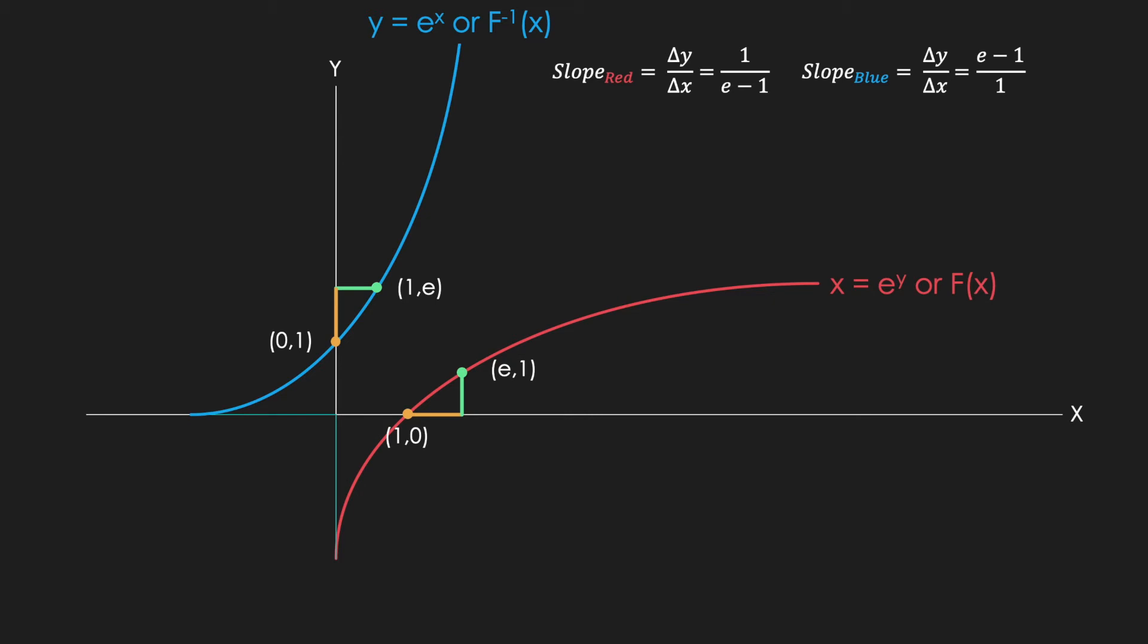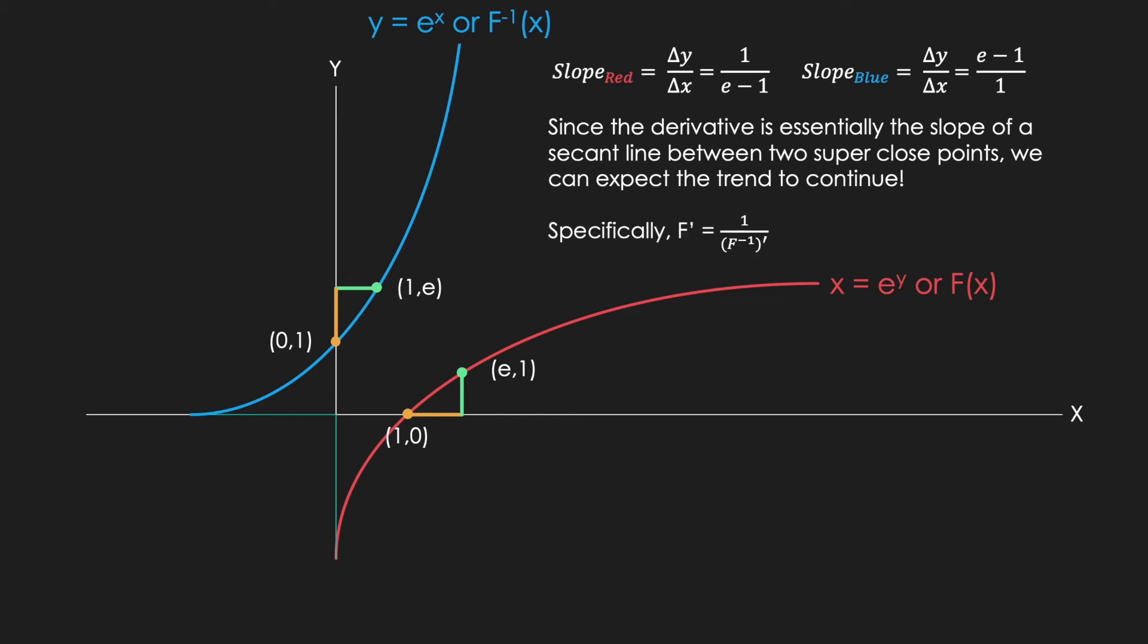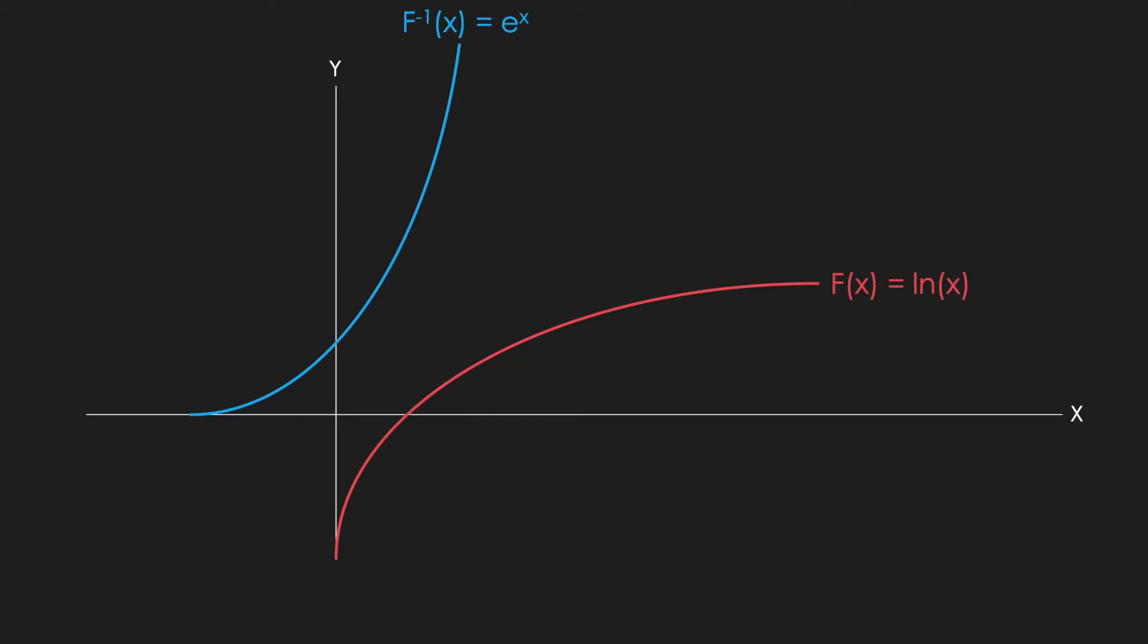Since the derivative is fundamentally a secant line between two super close points, we can expect this trend to continue here as well. More specifically, we can say that the derivative of our original function, the natural log, is one over the derivative of the inverse function, given that the points are reflections of one another. Well, the nice thing about this is that we already know that the derivative of y equals e to the power of x is just itself.